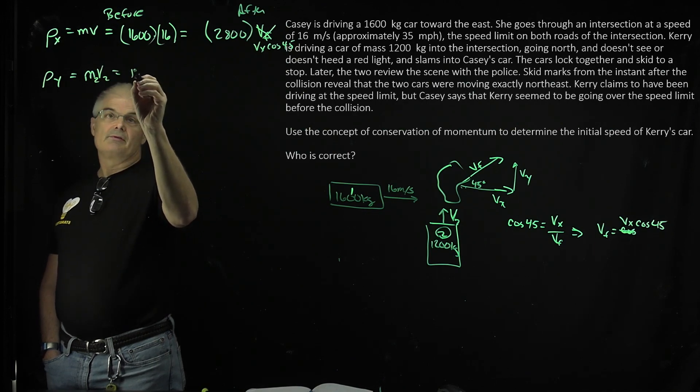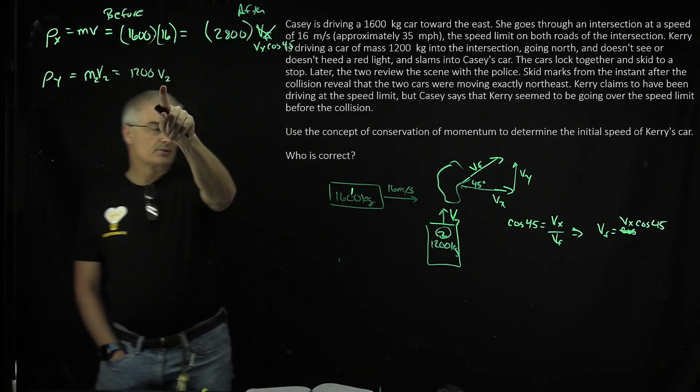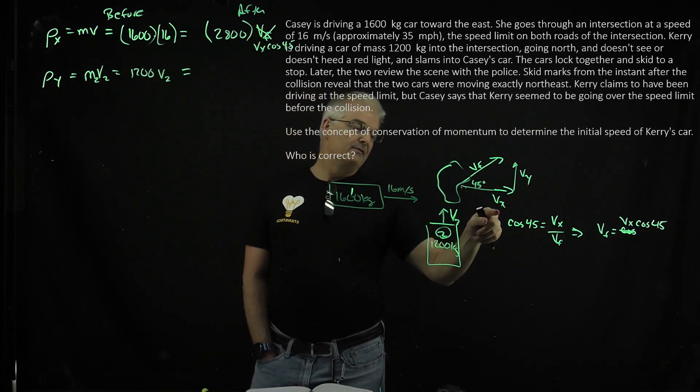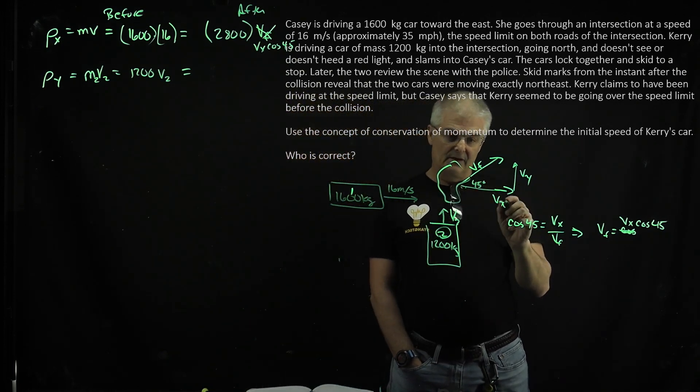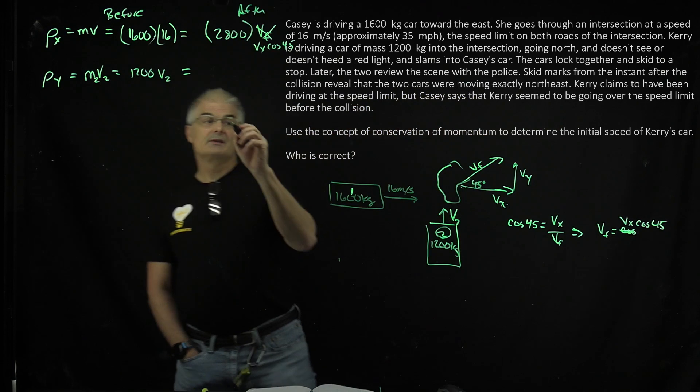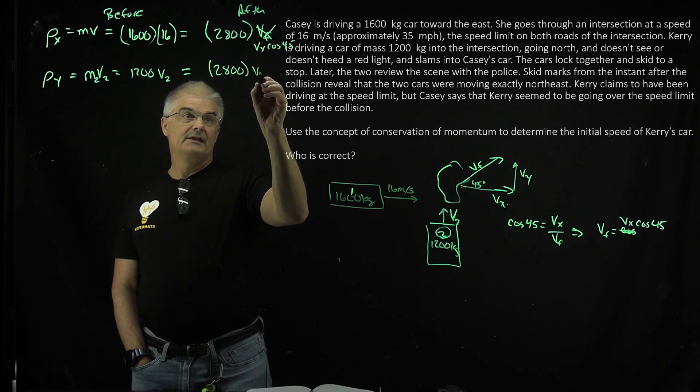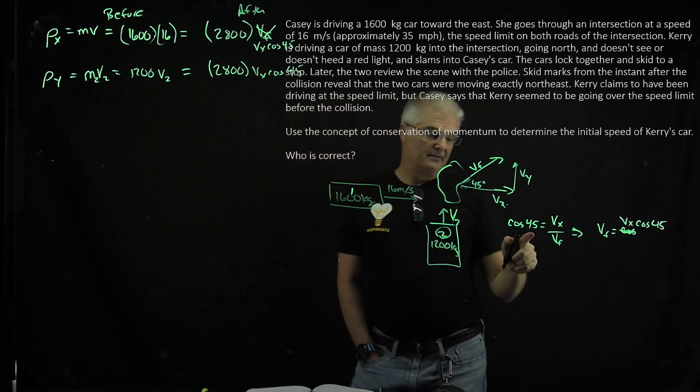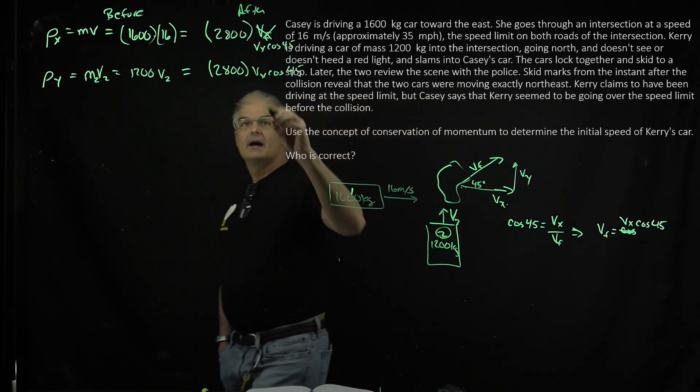So that's going to equal to 1200 times V two. This is what we're really trying to solve for, right? So what was her speed? But that's going to be equal to, let's think about this. We can say VX, VY, whatever. And as a side note, since this is a 45 degrees angle, you realize that VX and VY are the same number. That's huge. So we can say that it equals 2800 times VX over cos 45. Now you could say VY over cos 45, but since VX and VY are the same number, it's the same number.